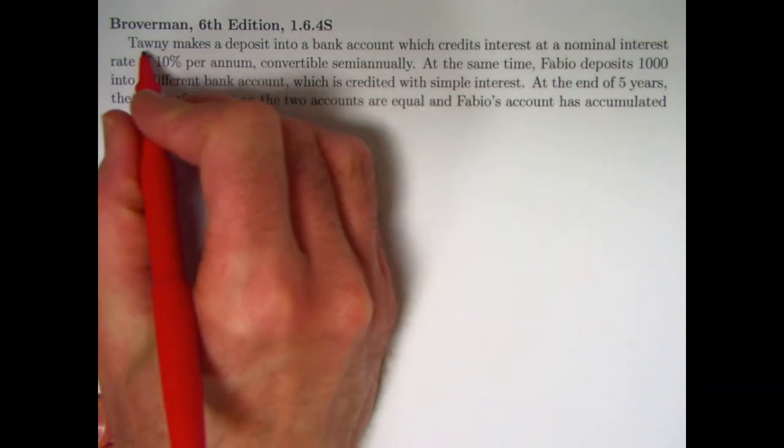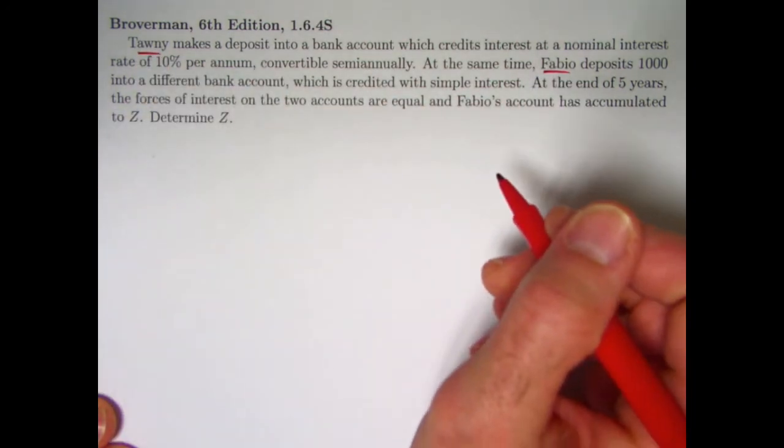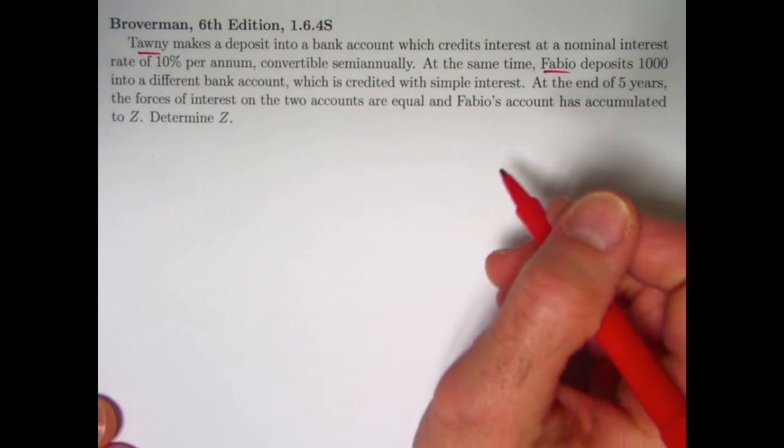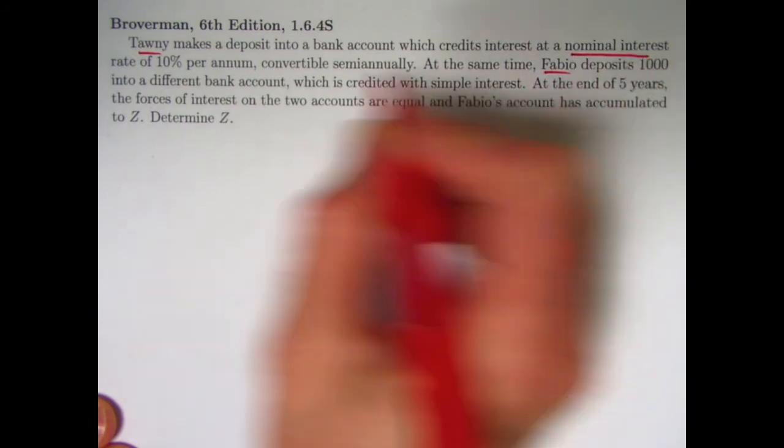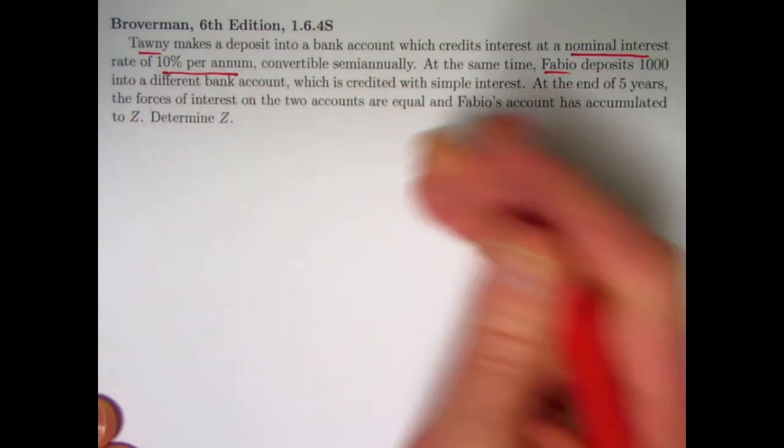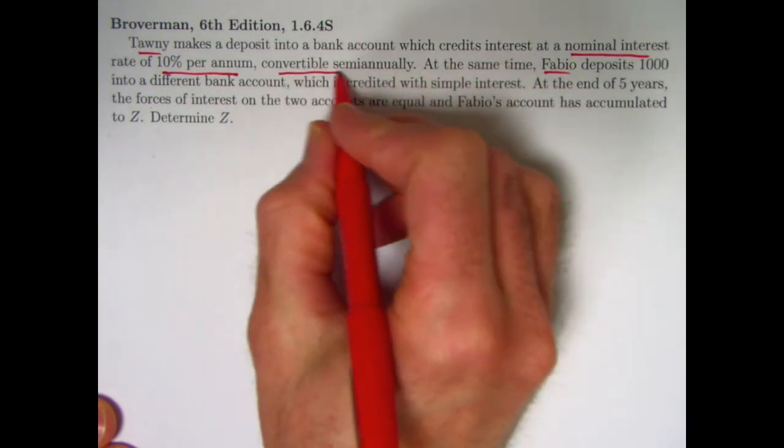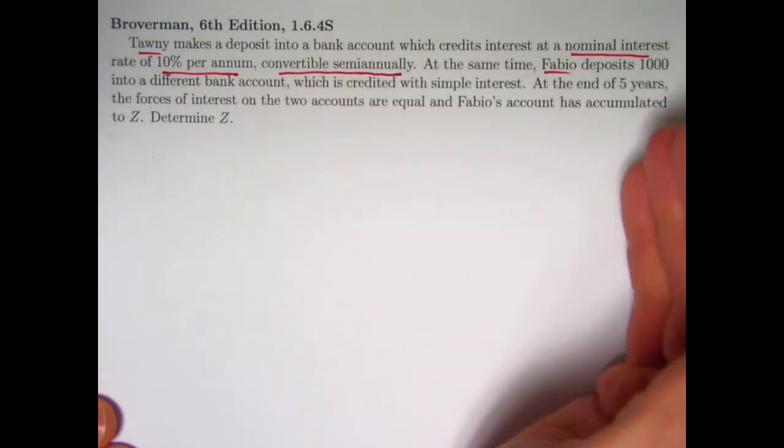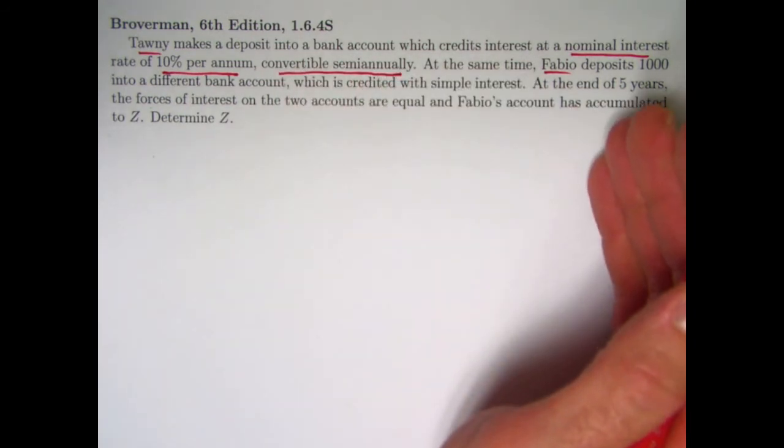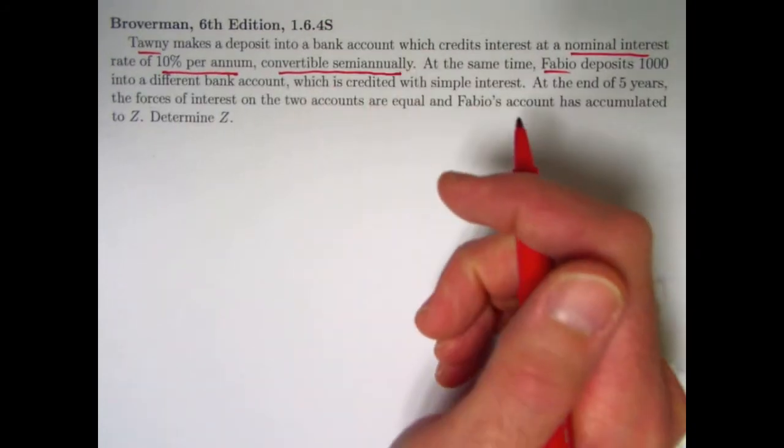So you've got two people, Tawny and Fabio, depositing money into different accounts. Tawny's account has a nominal interest rate of 10% per annum, meaning per year, convertible semi-annually, and when you read that, the first thing you want to say to yourself is that's compound interest, compounded twice per year.